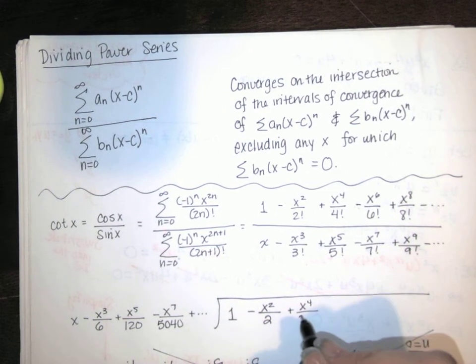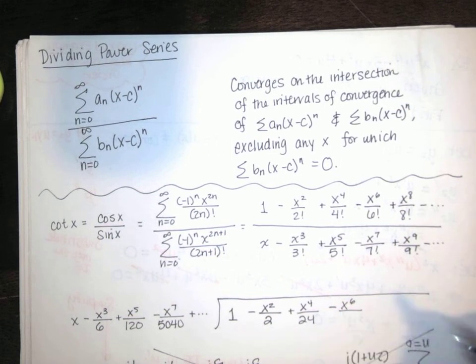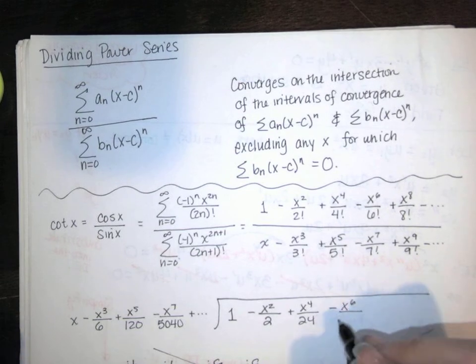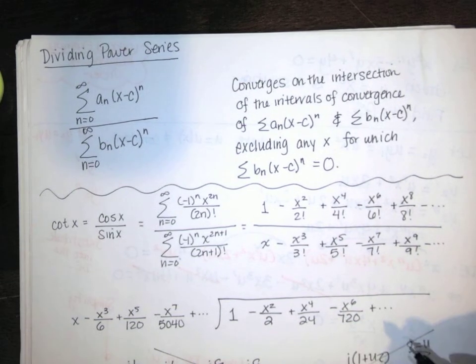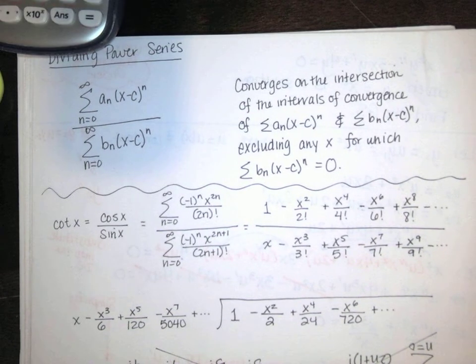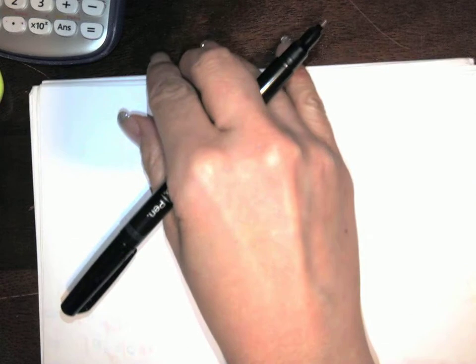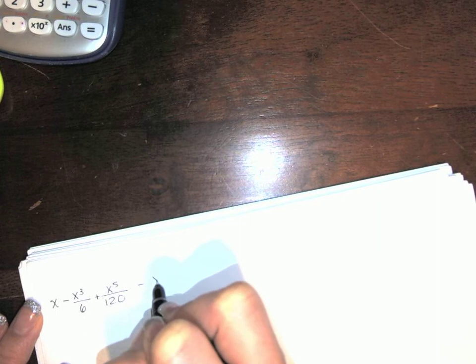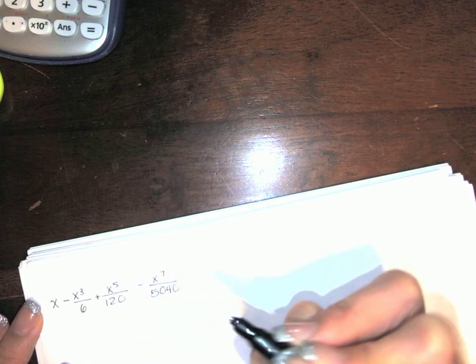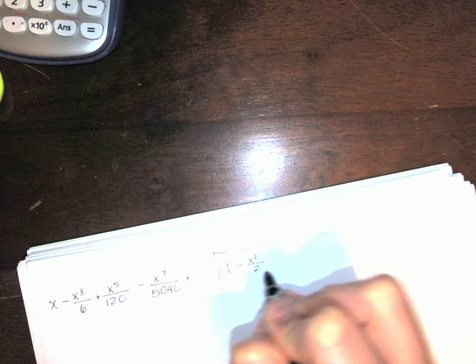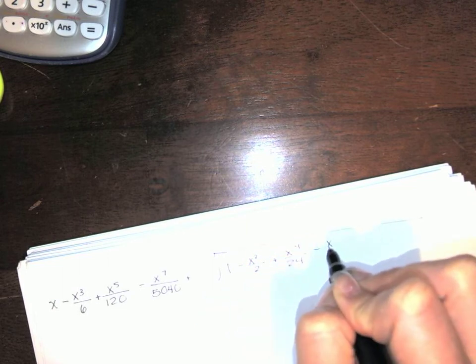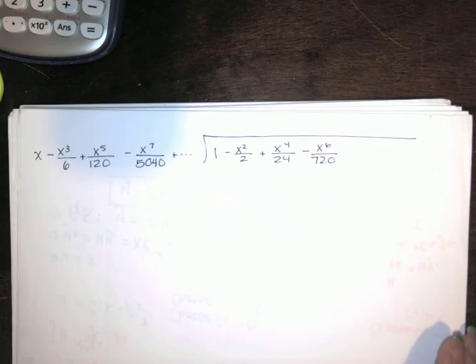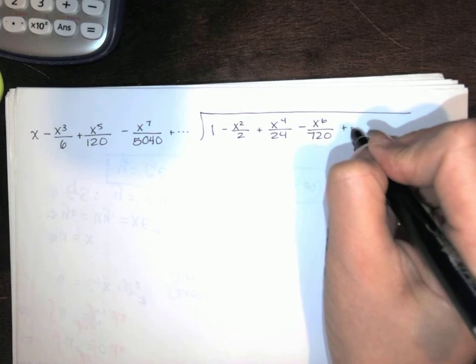Now, because cotangent is undefined at zero, we're going to get something that's not exactly a power series. It's not exactly a power series because we're going to have x to a negative power, and power series only include x's to non-negative powers. Also, note that at x equals zero, sine of x is also zero, so this will be undefined when x equals zero because the series in the denominator converges to zero there.